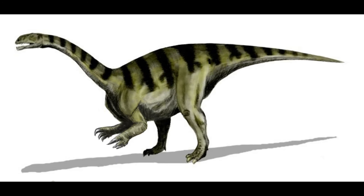The Cretaceous period, from about 145 to 66 million years ago, saw the continued evolution and diversification of mammals. Mammals remained relatively small and inconspicuous compared to the dominant dinosaurs, but continued to adapt and thrive. Eutherians — the group including modern placental mammals — began to diversify, and fossils of early Eutherians such as Eomaia provide insights into early placental mammal evolution. Eomaia exhibited features such as a more developed placenta and longer gestation period.